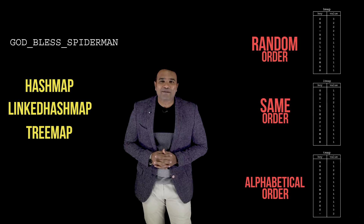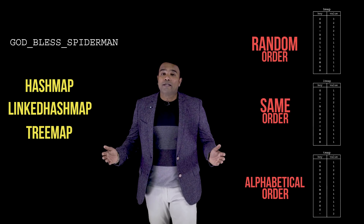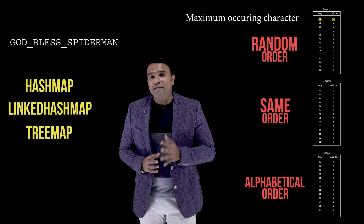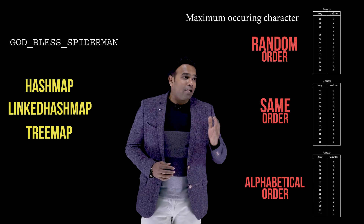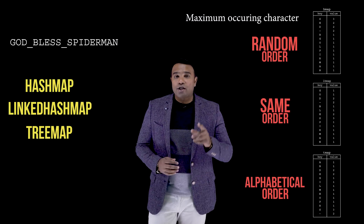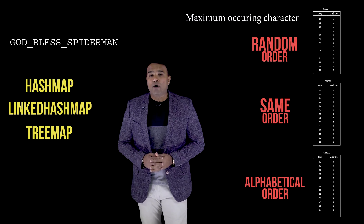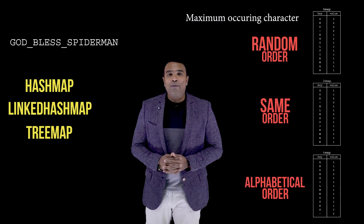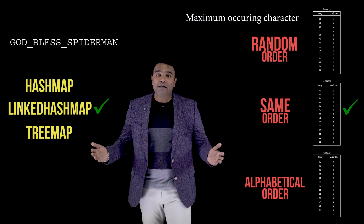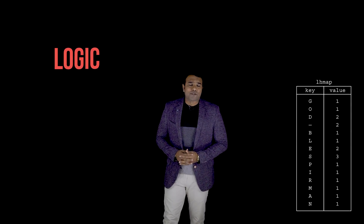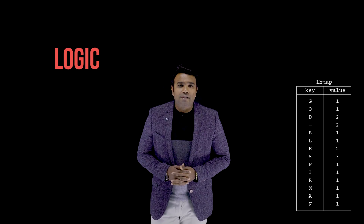Which of these three maps should we use? If you notice the HashMap carefully, it suggests that key 's' has occurred twice as the maximum — and the LinkedHashMap and TreeMap suggest the same. This shows that you have the liberty to use any of the three maps. I will be proceeding ahead by making use of the LinkedHashMap.